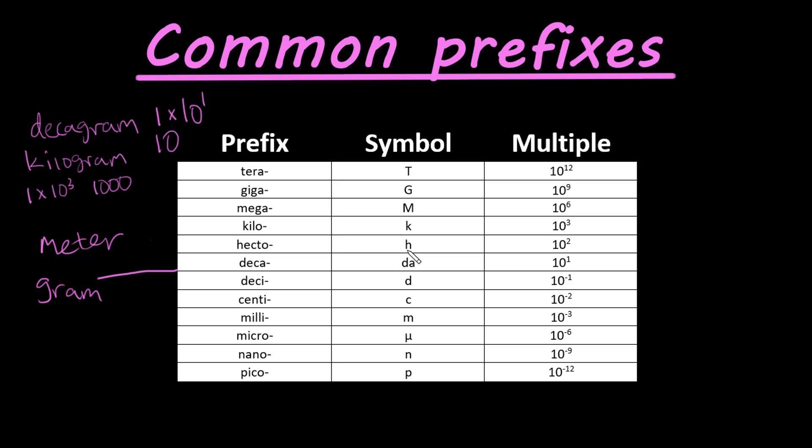Hecto, symbol is h, which is a multiple of 10 to the second power. Kilo, k, 10 to the third power. Mega, it's a big M, 10 to the sixth power.